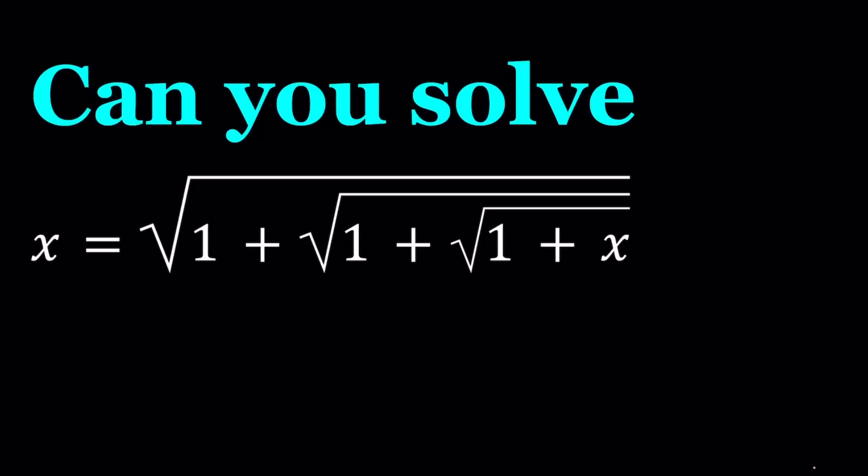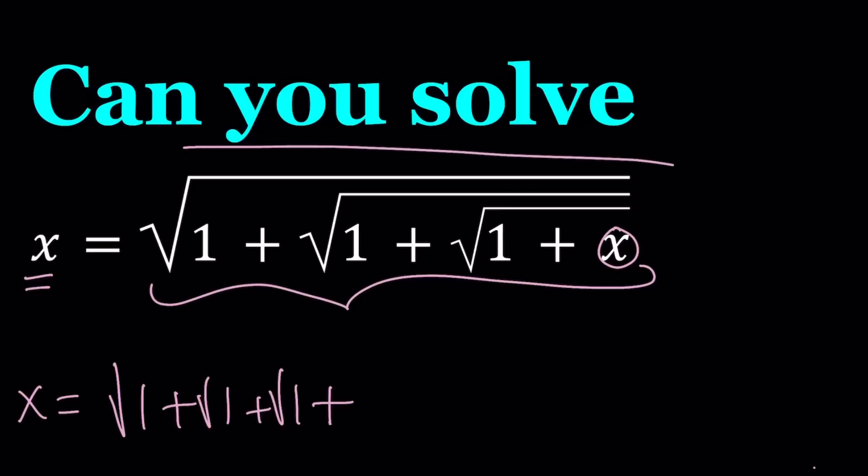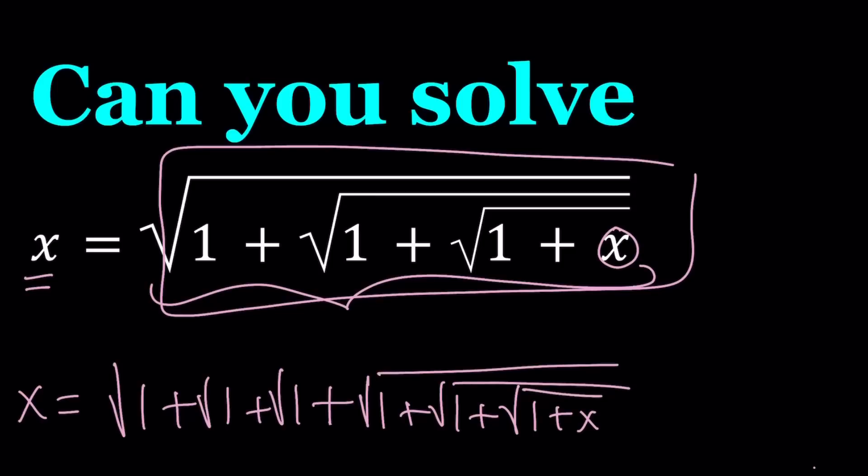So notice that this expression contains x inside and x is equal to this huge radical. So if I replace this x with x which is this whole thing then I get the following. x equals square root of 1 plus the square root of 1 plus the square root of 1 plus. Now x will be replaced with this whole thing and that's going to be the square root of 1 plus the square root of 1 plus the square root of 1 plus x. I hope that makes sense.